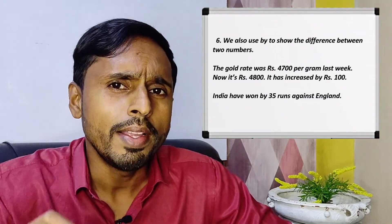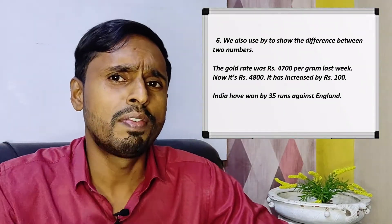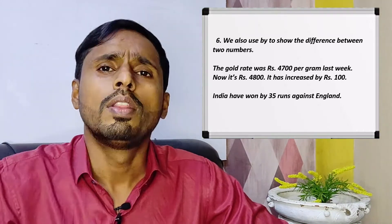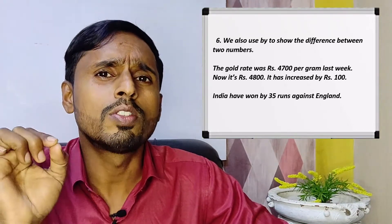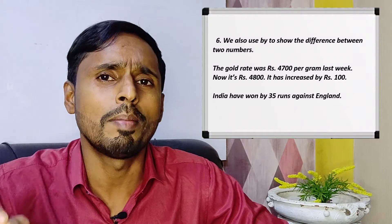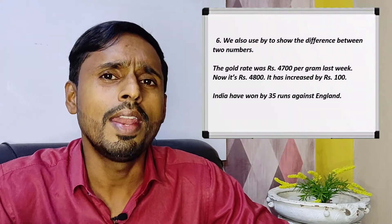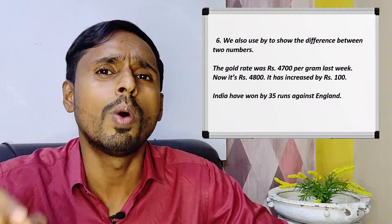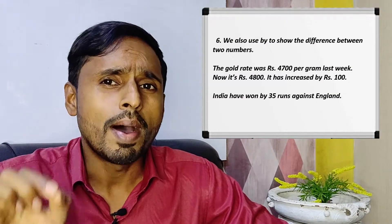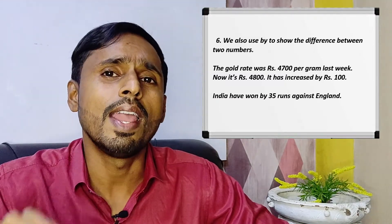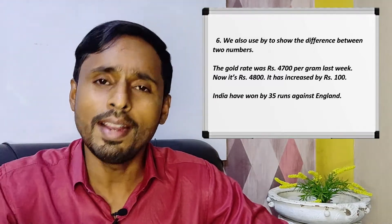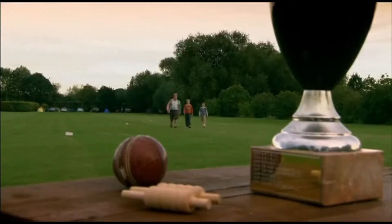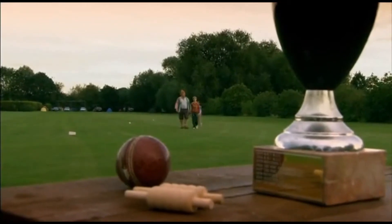We also use 'by' to show the difference between two numbers. The gold rate was 4,700 rupees per gram last week; now it's 4,800 — it has increased by 100 rupees. He won, but by 190 votes. India have won by 35 runs against England. But they lost by about 70 runs.